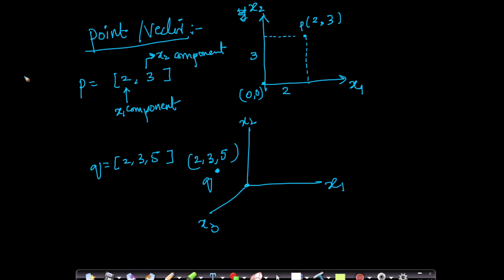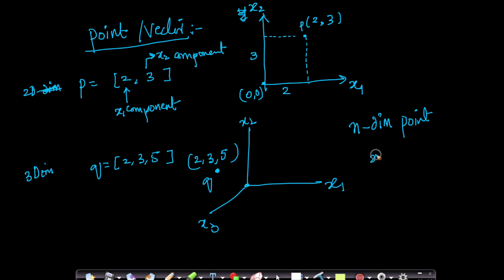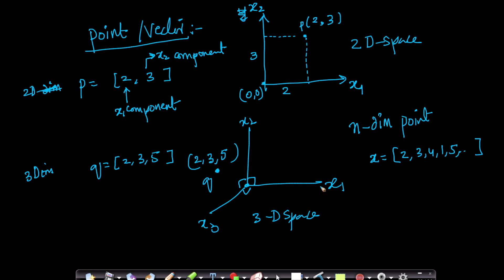The immediate question is: this is a two-dimensional point and this is a three-dimensional point — what about an n-dimensional point? How do I represent an n-dimensional point? Linear algebra is all about taking the learnings from 2D and 3D and extending to n-dimensional spaces. Given any point x, I can represent it in n dimensions with n components: 2, 3, 4, 1, 5, and so on. If I have n values, it represents an n-dimensional point in an n-dimensional space. We cannot visualize a 4D or 5D space, but mathematically I can write a point in n-dimensional space using n components.